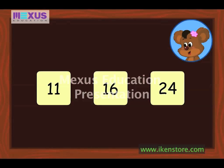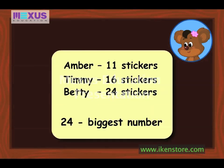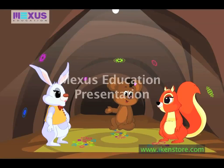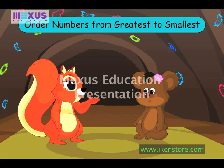Now, let's compare the numbers and find out the greatest and the smallest number. This will let us know who has collected more stickers. Let's find the smallest number. The number 11 comes first while counting. So, 11 is the smallest of the three numbers. Now, the number 16 comes after the number 11 while counting. So, the number 16 is greater than 11. But the number 24 comes after both the numbers 11 and 16 while counting. So, the number 24 is the biggest number among the three. So, as I have collected 24 stickers, which is the biggest number, I have collected more stickers than you both. The walls are looking good, Betty.